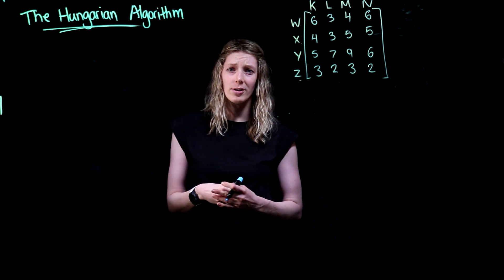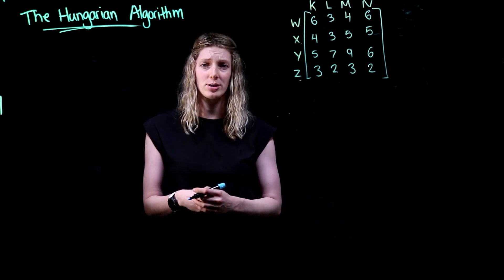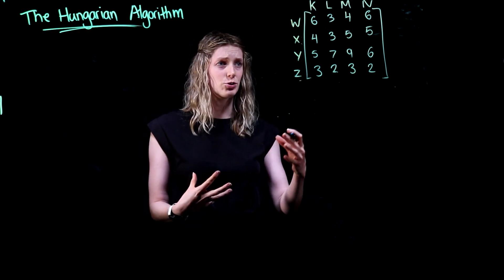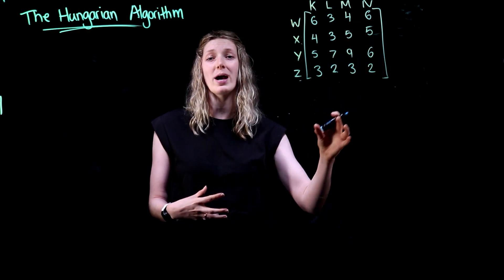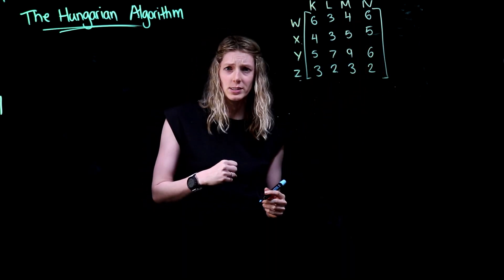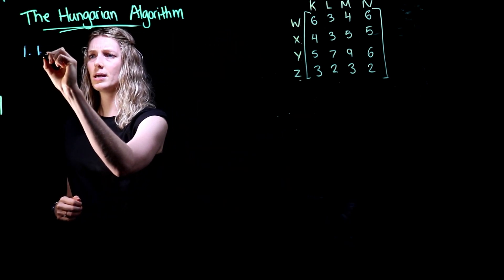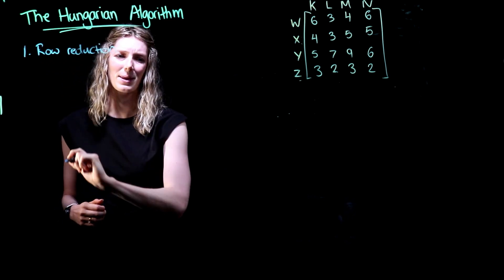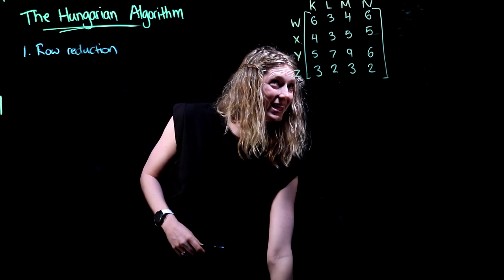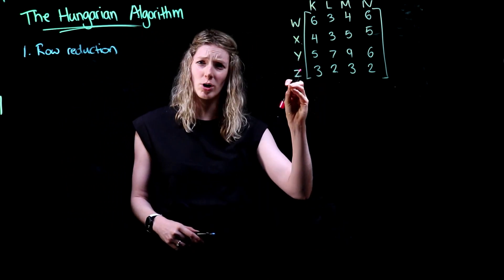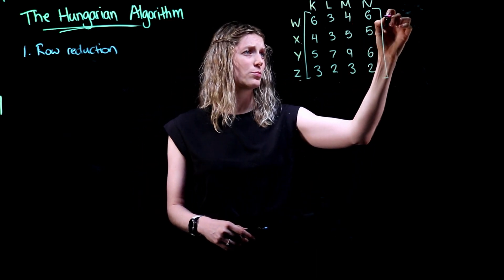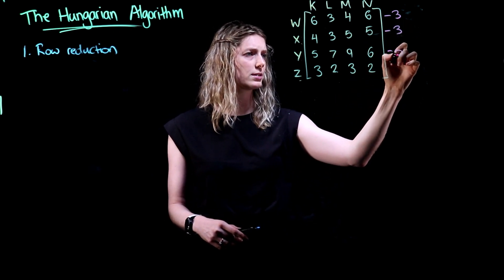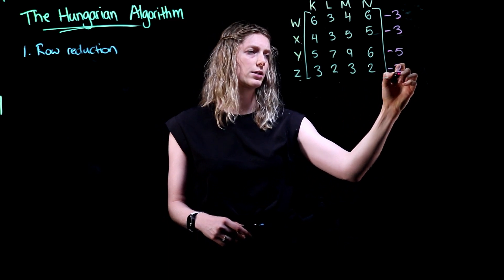The first part of the Hungarian algorithm is representing this in a matrix form, which we already have here. Now we're going to follow a few steps in order to take this matrix and turn it into a completed allocation. So the first step that we're going to complete is something called row reduction. This is where we are going to take the smallest value from each row and subtract it. So for row W we would subtract 3, row X subtract 3, row Y subtract 5, and row Z subtract 2.